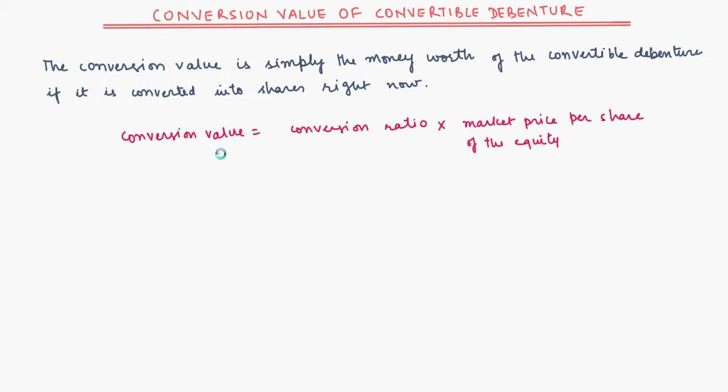Conversion value is equal to conversion ratio, that means how many shares are going to be received for each debenture, multiplied by the market price per share of the equity. Equity means the shares.